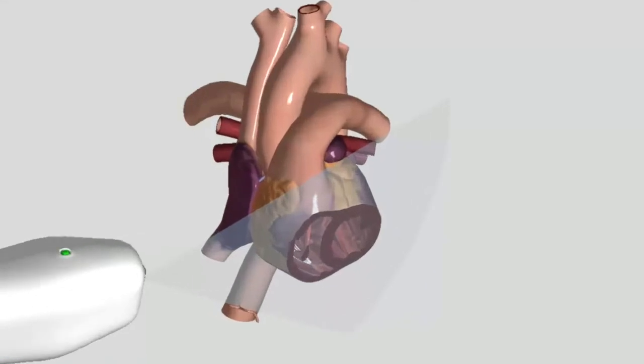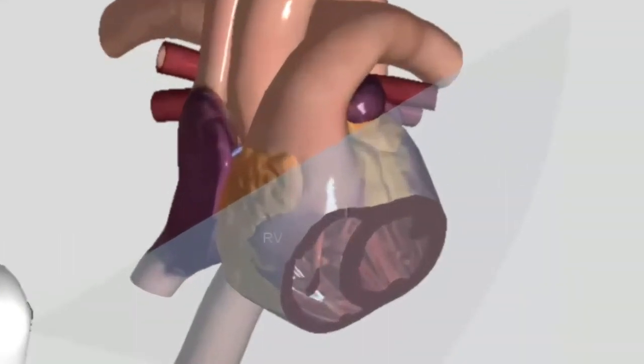And the first thing I want you to notice is the difference in thickness between the right ventricle and the left ventricle. You can see pretty clearly here that the left ventricle is much thicker than the right ventricle. And this difference exists because of the different jobs that the ventricles have to do. The right ventricle has to pump blood just through the pulmonary circulation to the lungs and then back to the left atrium.